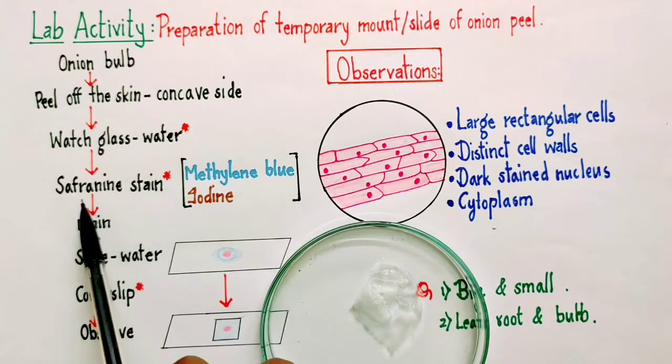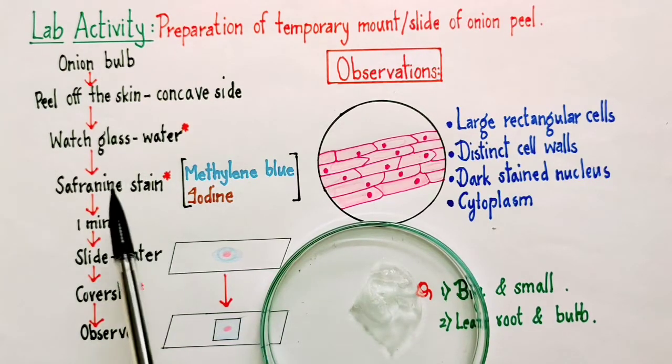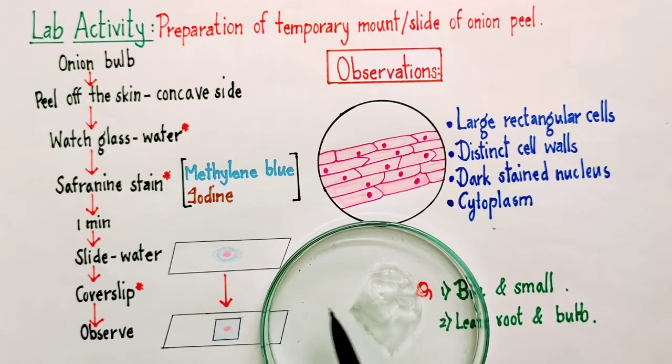The moment you add a drop of stain, after that you need to gently mix it and wait for about one minute. This time is important because we want the cells to take the stain. However, we should not allow over-staining of the cells also.